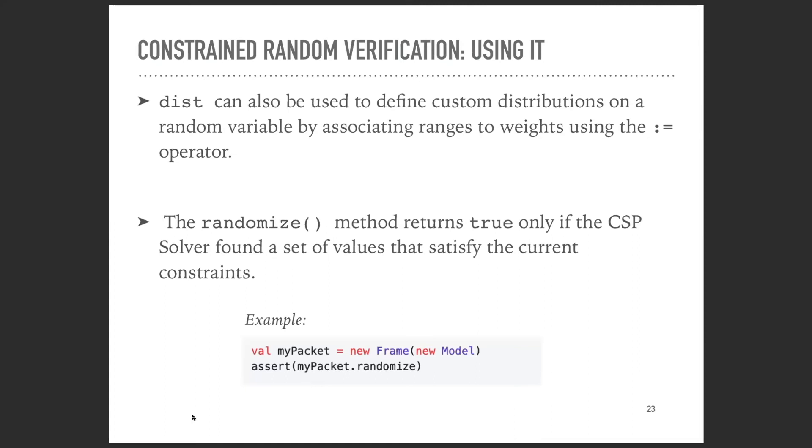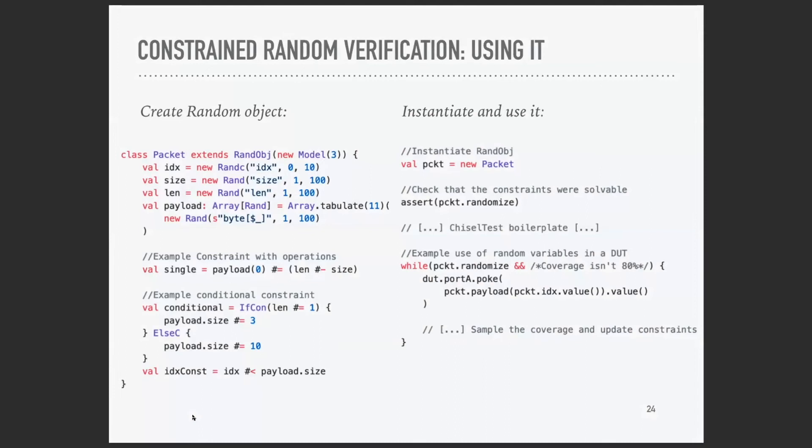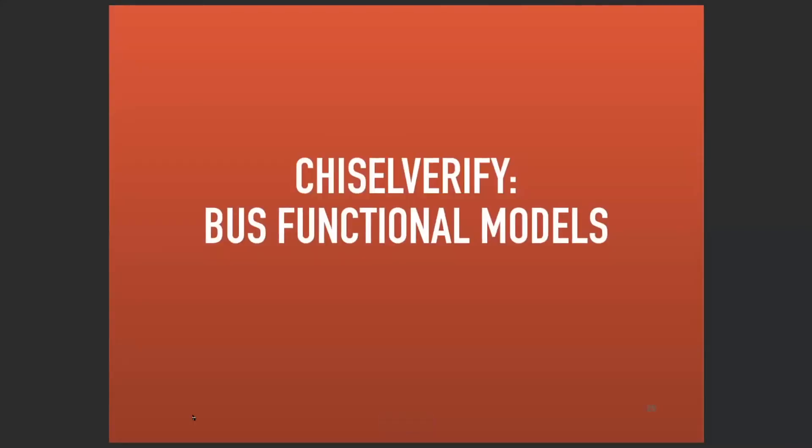Once we've defined our random objects, we have to randomize them using randomize fields. Every time we call this method, it will solve the constraints if they are solvable, which is why it's always important to check that the problem we defined was solvable. Here's a quick example of how to use it. The idea is we create our random objects with the random values, define our constraints afterwards, instantiate the random objects, randomize it whenever we need it, and get the values by calling the value method of our random variables.